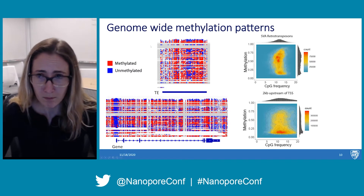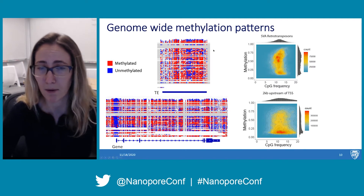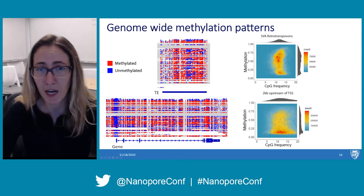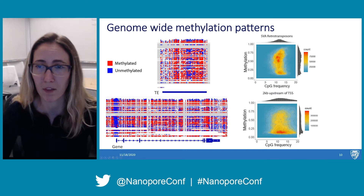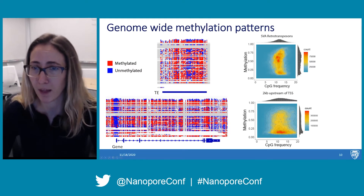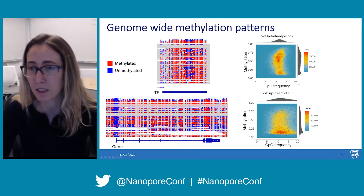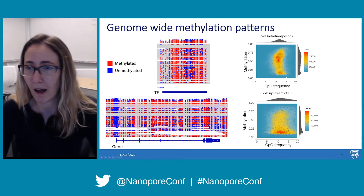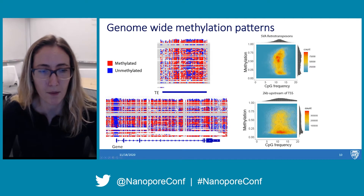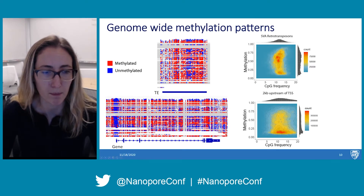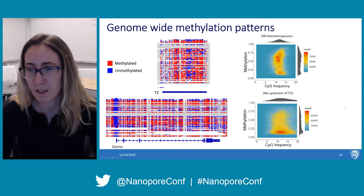With this new assembly, we were able to look at genome-wide methylation patterns on the first ever complete human genome assembly. Every gray line represents an individual sequencing read — for nanopore sequencing, that represents an individual cell — with red dots as methylated CG sites and blue dots as unmethylated CG sites. Transposable elements are largely CG-dense and hypermethylated, while gene promoters show hypomethylation and are also very CG-dense. These events were largely expected.